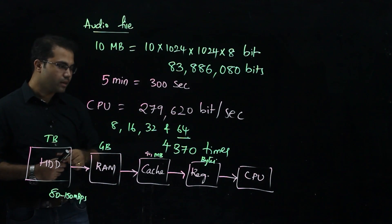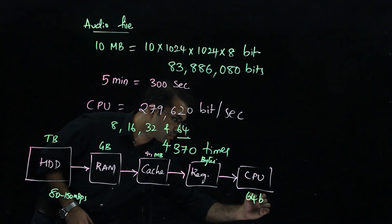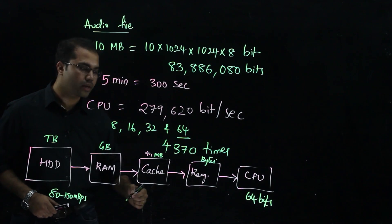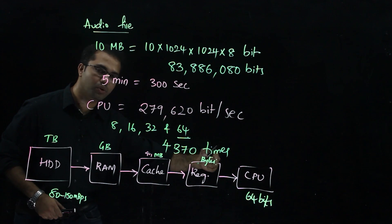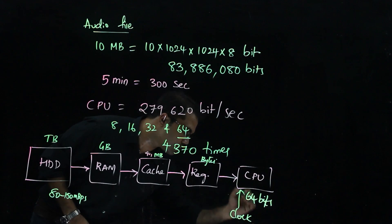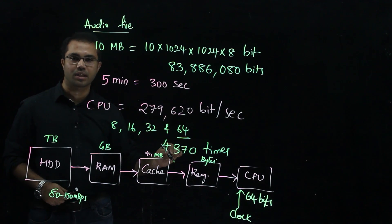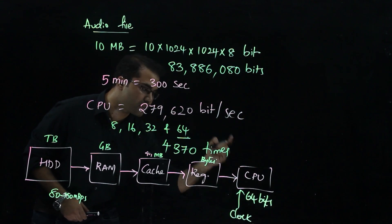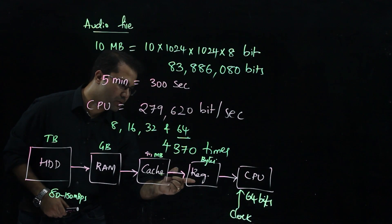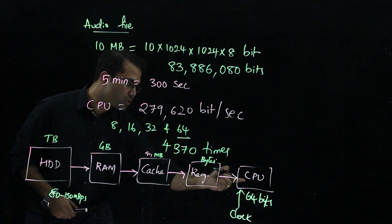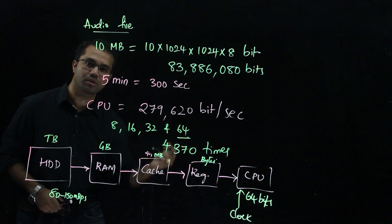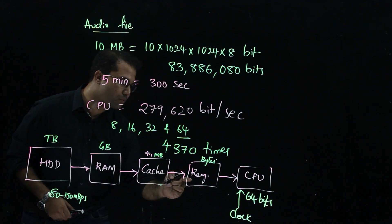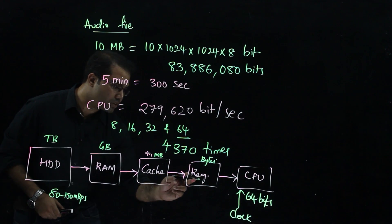So now one can understand: the CPU needs 64 bits of information for processing in a single run, and this process has to repeat. The CPU has to run very fast, and what makes it run very fast is a clock. We provide a clock signal to the CPU — it is a pulse signal from an oscillator. Based on the clock, the CPU performs its operation. It needs exactly 64 bits, and who provides those 64 bits? The register, because the register size is equivalent to the CPU size — for a 64-bit CPU, the register size is also 64.